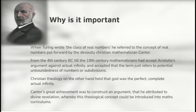Now, why is this important? Now we have to touch on the idealist school. When Turing wrote the class of real numbers, he was referring to the concept of real numbers put forward by the devoutly Christian Lutheran mathematician Cantor, who'd worked in the late 19th century. From the 4th century BC until the 19th century, mathematicians had accepted Aristotle's argument against actual infinity, and accepted that the term just refers to potential unboundedness of numbers or subdivision.